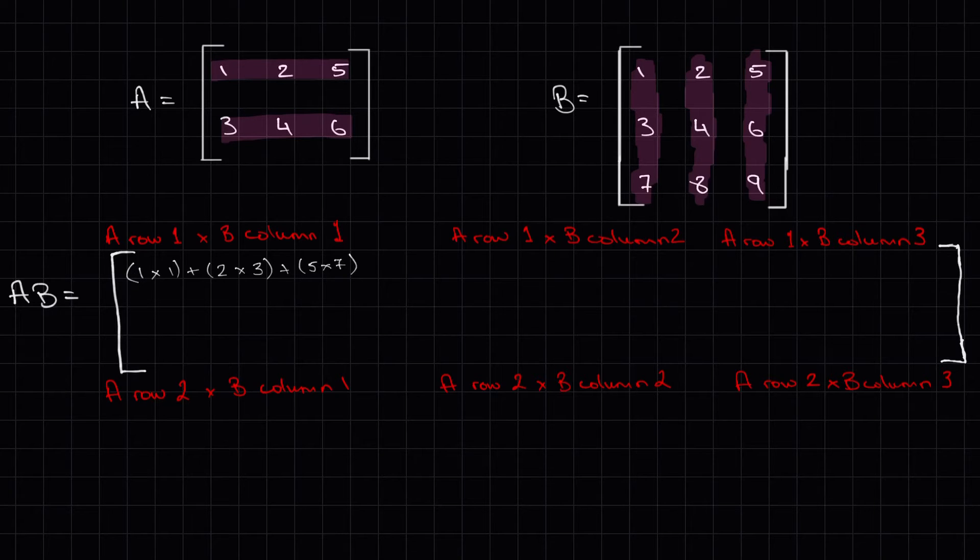Now we can repeat this process staying with row one from matrix A and multiplying it by column two in matrix B. Add this to the product of the next corresponding elements in each row and column and continue the process.